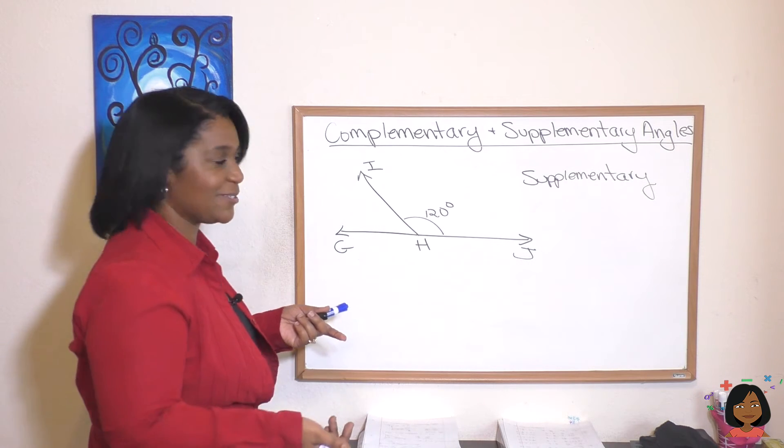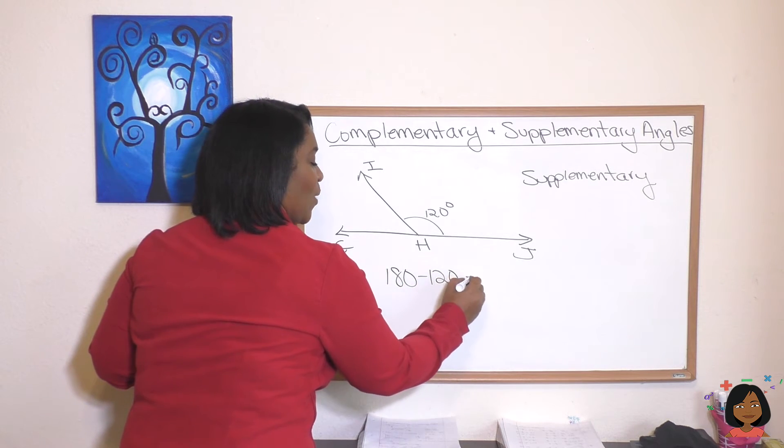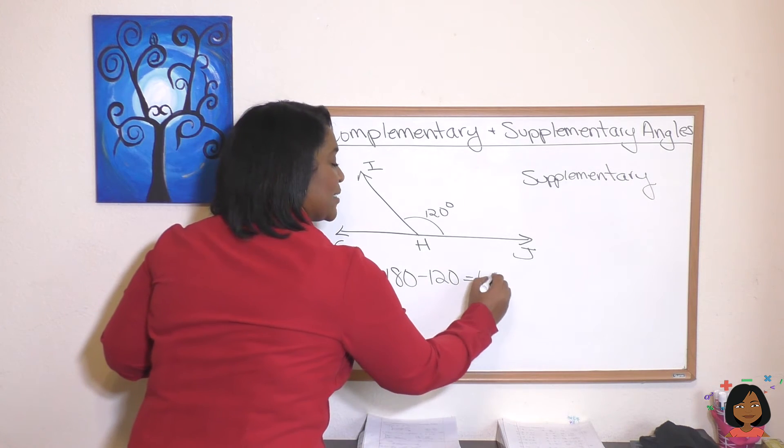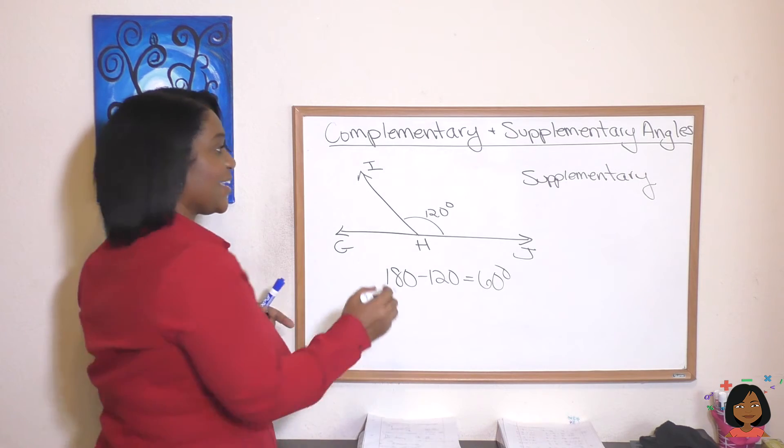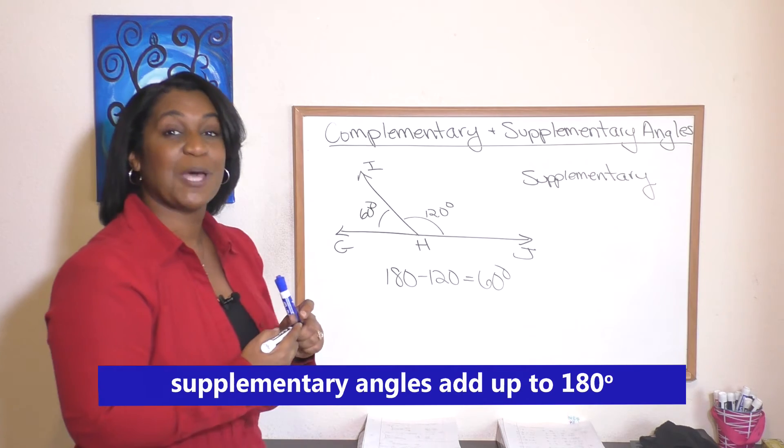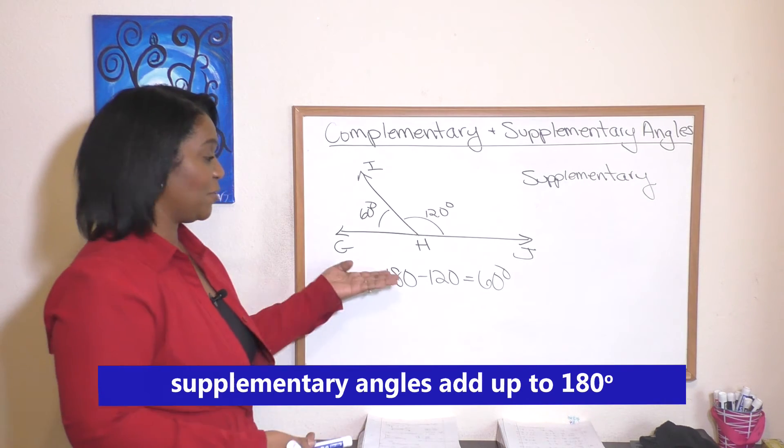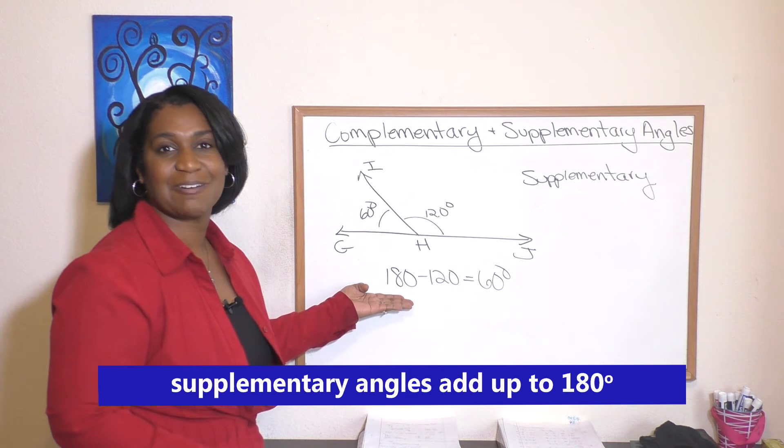So if I take 180 minus 120, I'm gonna get 60, and that tells us that this angle must be 60 degrees. So supplementary means that these two angles add up to 180 degrees, or what we call a straight angle.